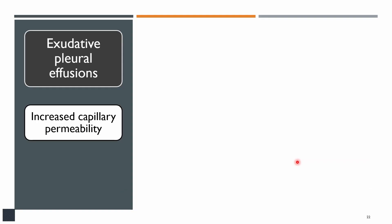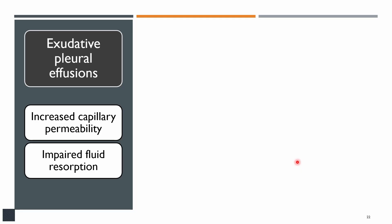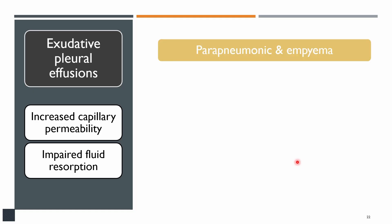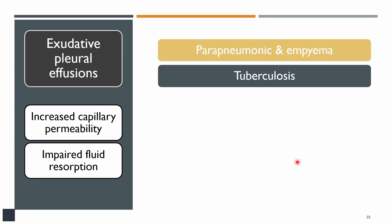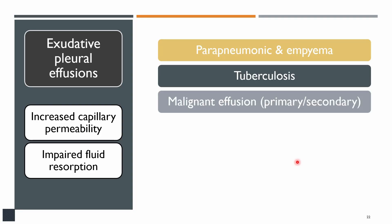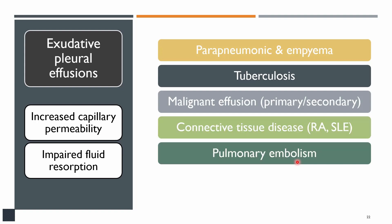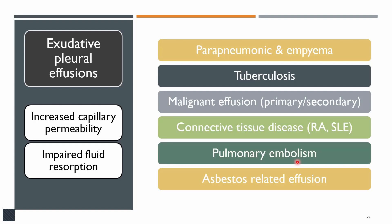Exudative pleural effusion is usually due to a cause within the chest. It results from increased capillary permeability or impaired fluid resorption. Parapneumonic effusion and empyema due to pneumonia are the most common causes. Tuberculosis, malignancies, connective tissue diseases, pulmonary embolism, and asbestos-related effusion can also cause exudative pleural effusion.